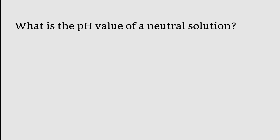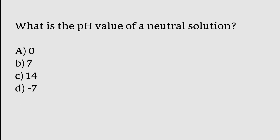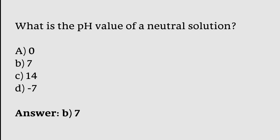What is the pH value of a neutral solution? 0, 7, 14, minus 7. The correct answer is option B. 7 is the pH value of a neutral solution.